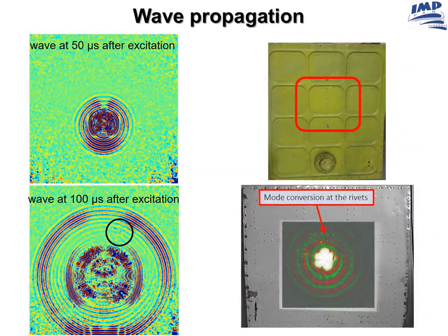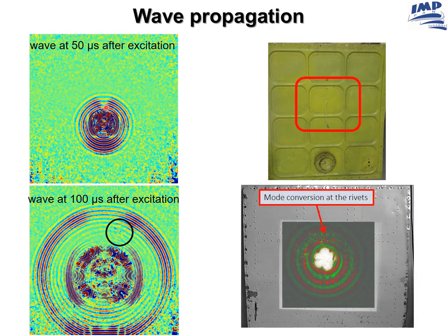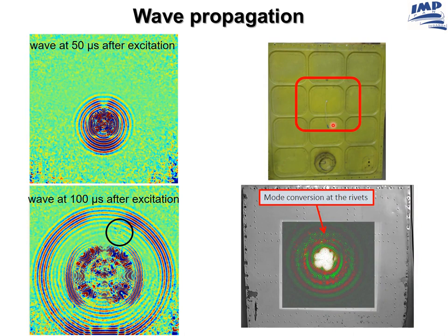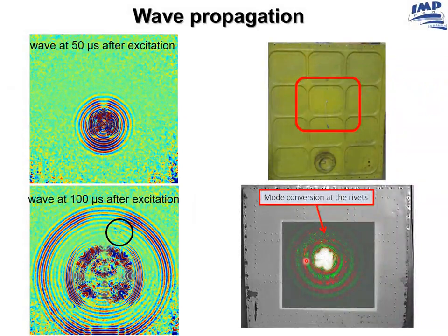Here are some further examples of wave propagating in structures. We see the interaction of a wave with a defect just after excitation; on the bottom figure the wave propagated for 100 microseconds and was scattered by another defect in the investigated sample. The example on the right shows an aircraft panel with many rivets and a piezoelectric sensor at the center. The result of measurement with the laser vibrometer shown at the bottom reveals that the wave propagating in the structure is converting at various locations related to the position of the rivets.